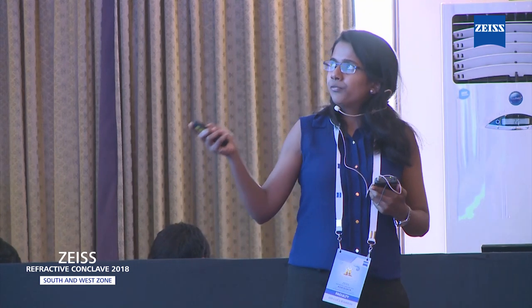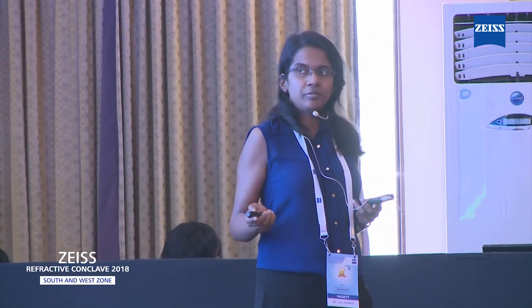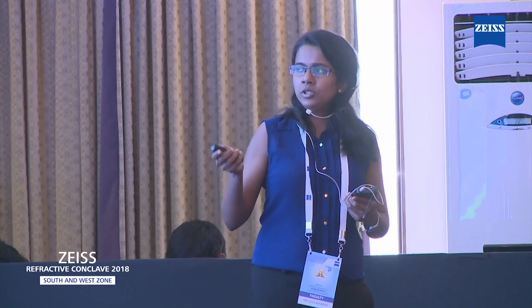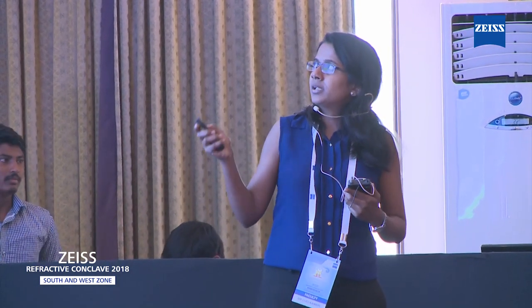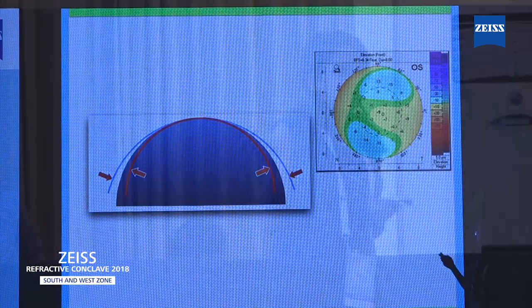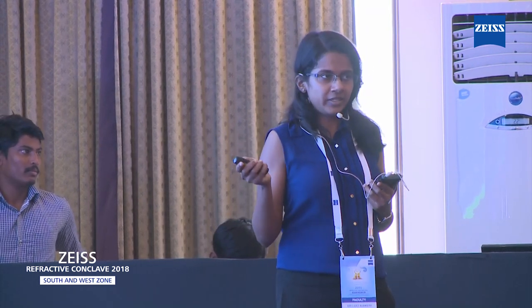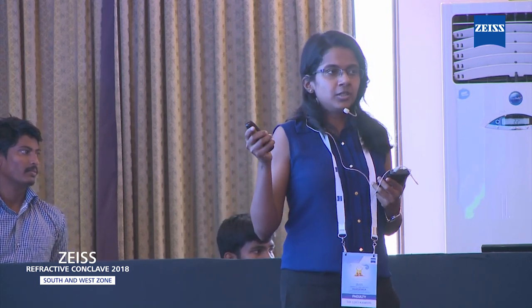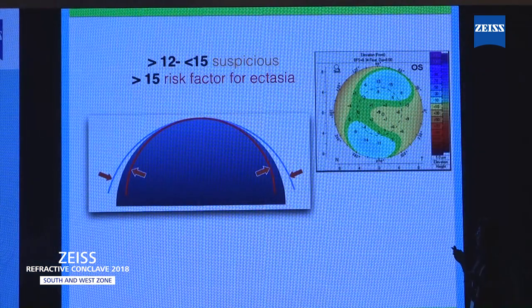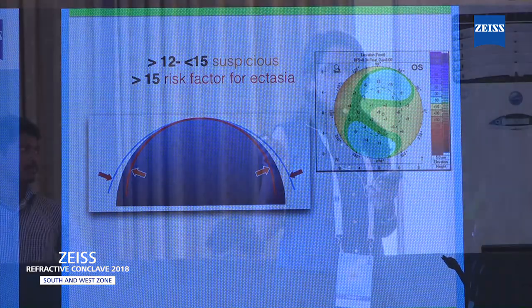Then you move to the color map. The first map is the axial or sagittal curvature, which tells you about the shape of the cornea — whether it's a normal cornea, or shows superior/inferior steepening, skewing of the axis, or an irregular cornea. Then you move to the elevation maps. These are calculated using a best fit surface, where hotter colors represent cornea steeper than the best fit sphere and cooler colors represent cornea flatter than that. For anterior elevation, 12 to 15 microns is considered suspicious and more than 15 is a probable cause of ectasia. Similarly, in the posterior cornea, 17 to 20 is suspicious and more than 20 is a risk factor for ectasia.